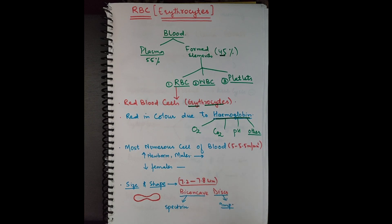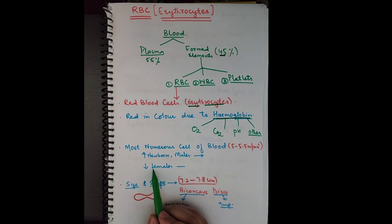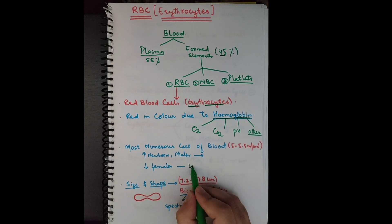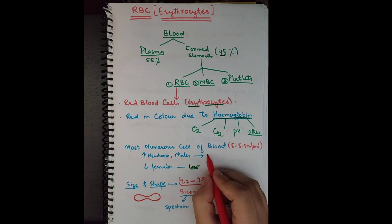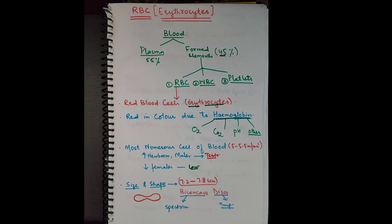RBCs are the most numerous cells of the blood because their count is 5 to 5.5 million per millimeter cube. In the case of males and newborns the count is usually high, and in the case of females the count is usually lower. This is because testosterone and androgens have a stimulatory effect on the bone marrow, while estrogens have a relatively inhibitory effect.